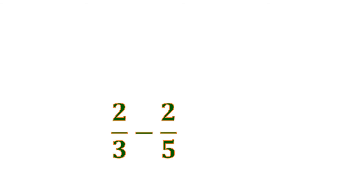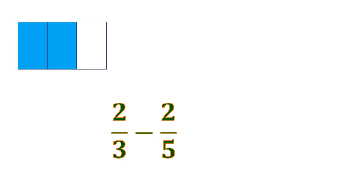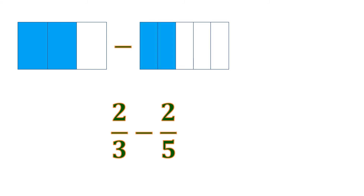Another example for subtraction: we have 2 thirds minus 2 fifths. This time the denominators are not multiples of each other — they are relatively prime. So let's visualize: 2 shaded parts out of 3 minus 2 shaded parts out of 5. For 2 thirds, since we want to make it similar with the 5 in 2 fifths, we're going to divide each piece of 2 thirds into 5, so it all becomes 15. Instead of 2 thirds, it's now 10 fifteenths — the same value, just transformed in appearance.